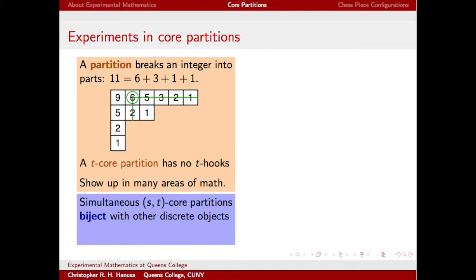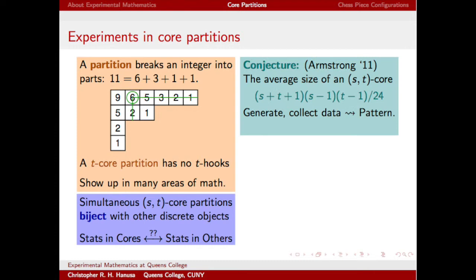When I do experiments, I try to see how combinatorial statistics in core partitions relate to combinatorial statistics in these other families. By generating and collecting data, we can determine interesting patterns, such as this conjecture by Drew Armstrong, that the average number of boxes in an s-t simultaneous core partition is (s + t + 1)(s - 1)(t - 1) / 24. That means if you were to take all of the partitions that are both s-core partitions and t-core partitions, then averaged how many boxes they would have, you would get exactly this formula.